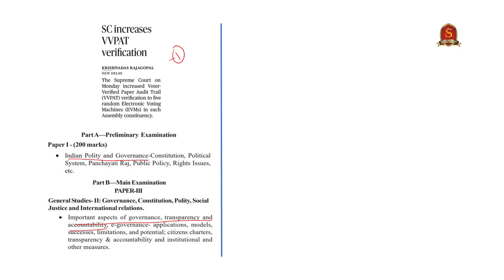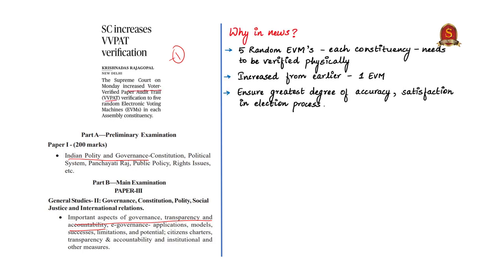Coming to the news article, the Supreme Court has increased the VVPAT verification. It mandated that five random EVMs from each Assembly and Parliamentary Constituency have to be verified physically. Earlier, the Supreme Court restricted physical verification to a single EVM from every constituency. This is to ensure a greater degree of accuracy and satisfaction in the electoral process and will also make elections more foolproof.